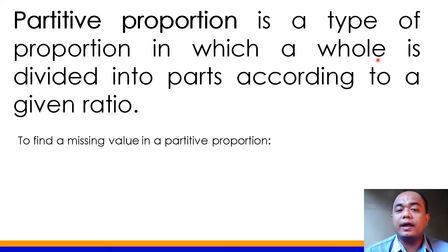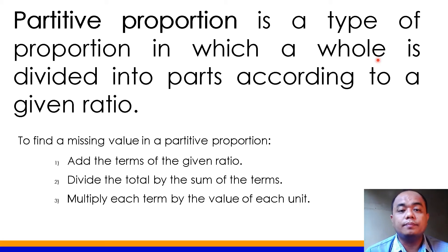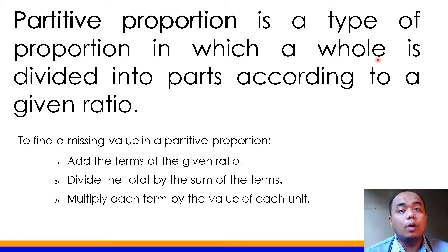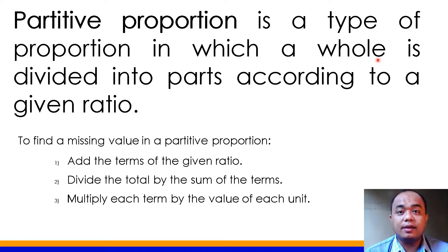To find a missing value in a partitive proportion, follow these steps: Step 1 — add the terms of the given ratio. Step 2 — divide the total by the sum of the terms. Step 3 — multiply each term by the value of each unit. Para maintindihan kung paano gamitin ang mga steps na ito, I will give you problems involving partitive proportion.